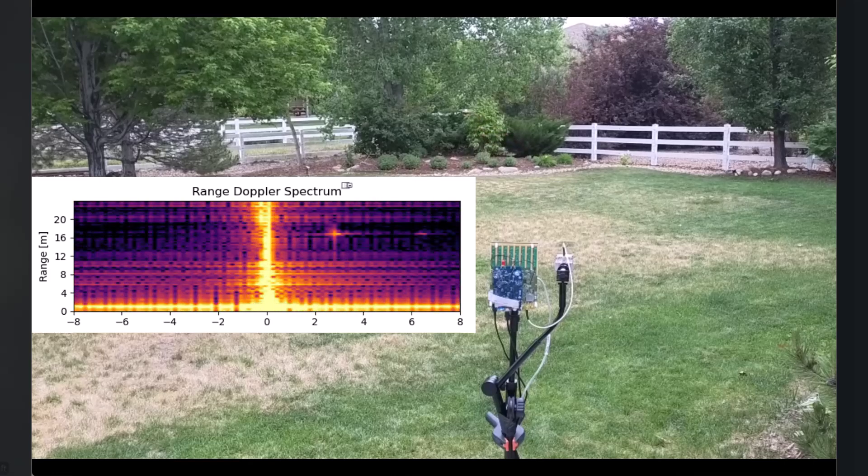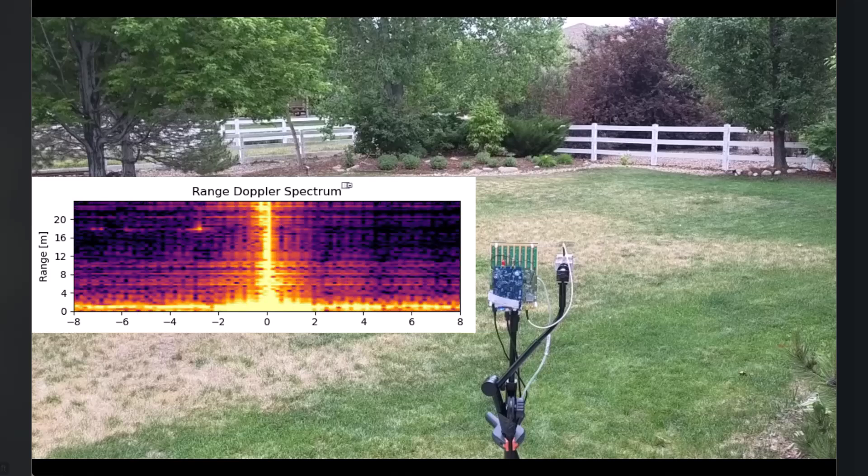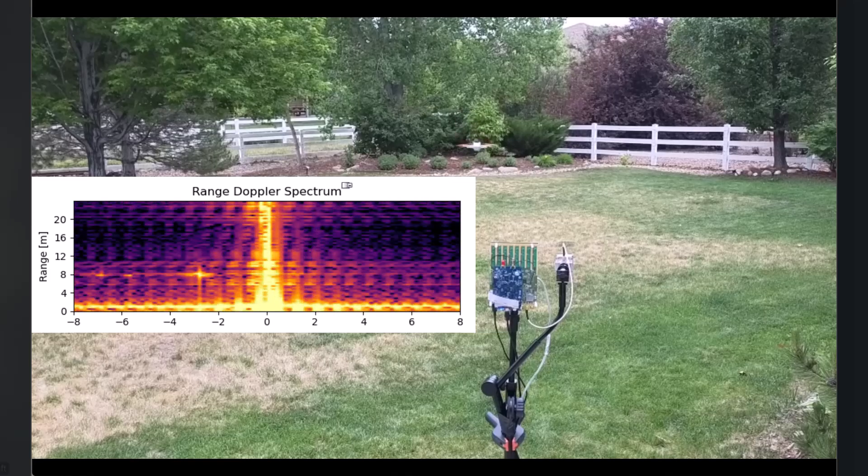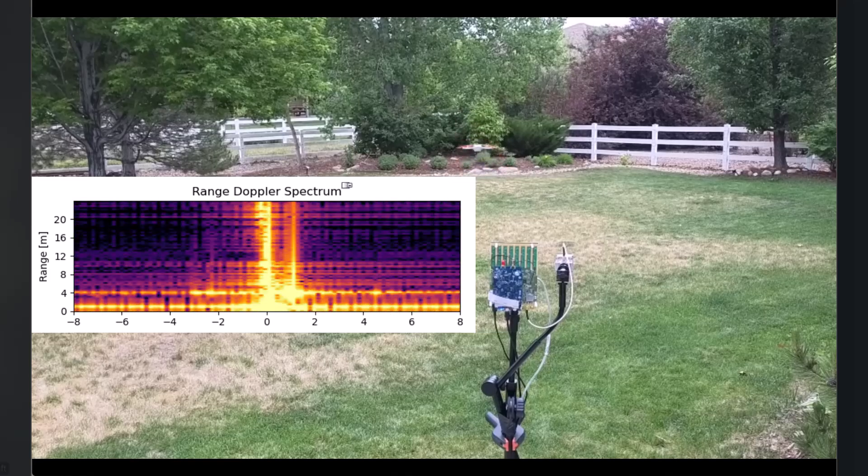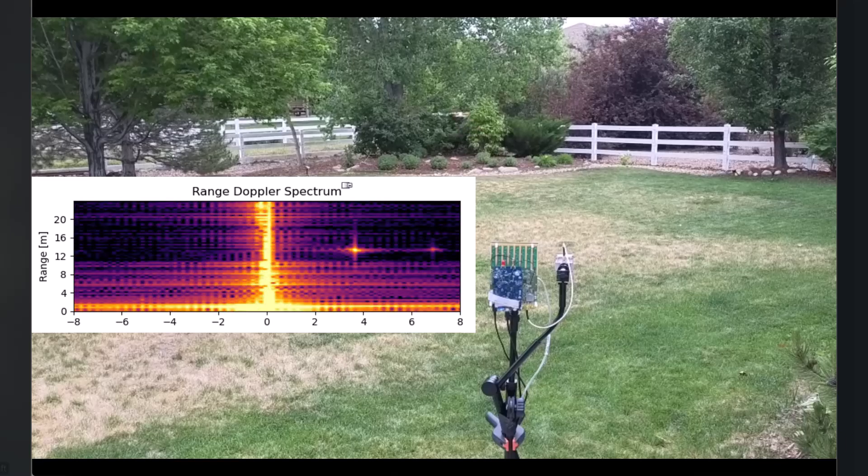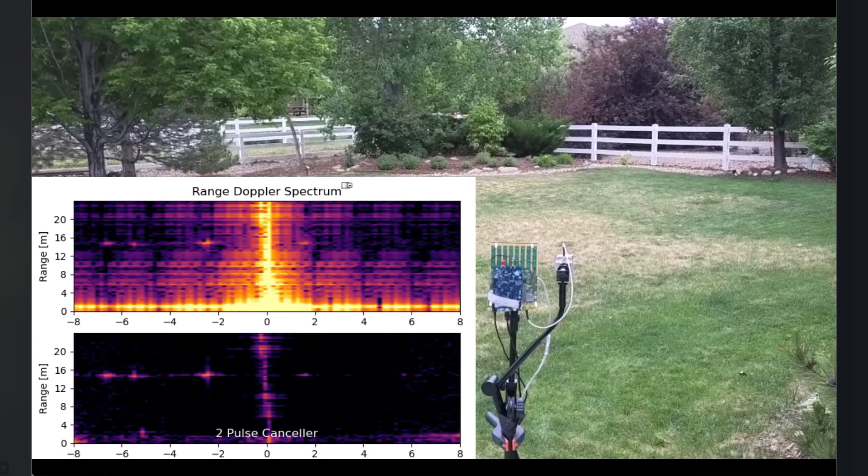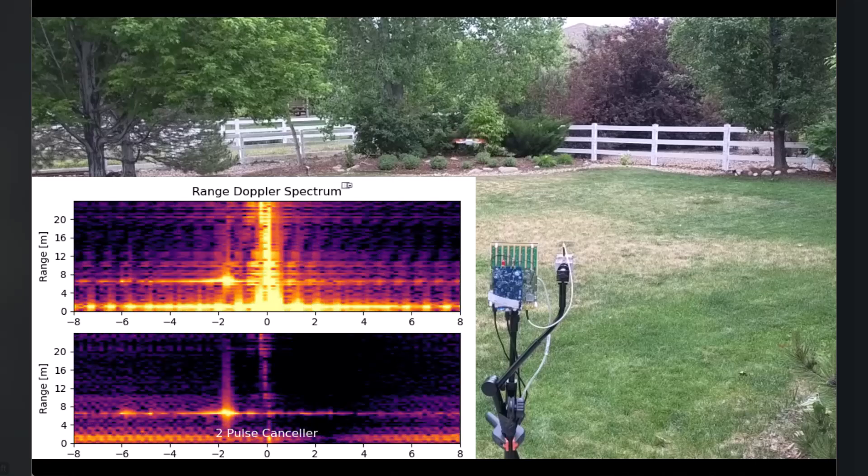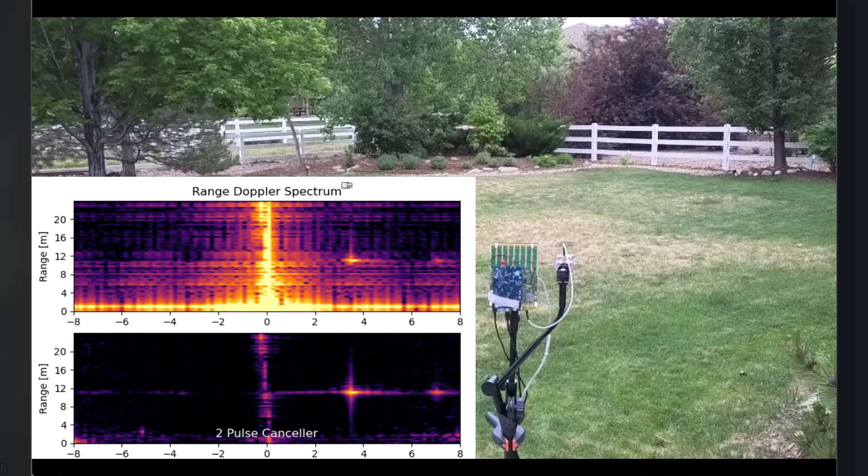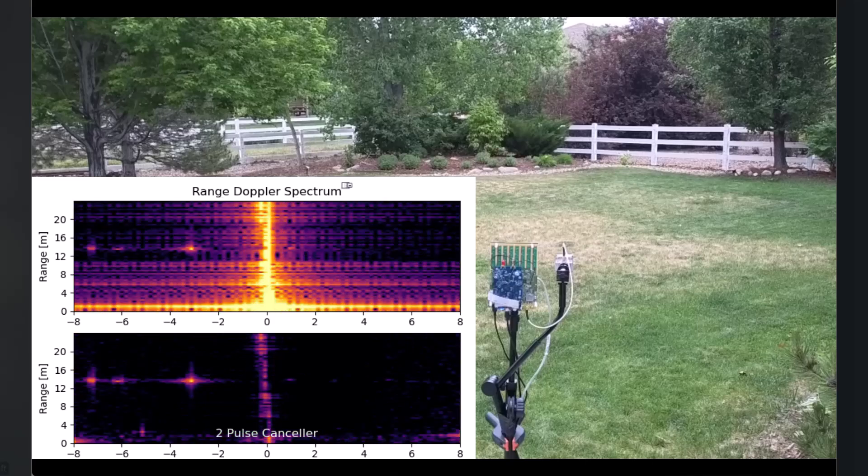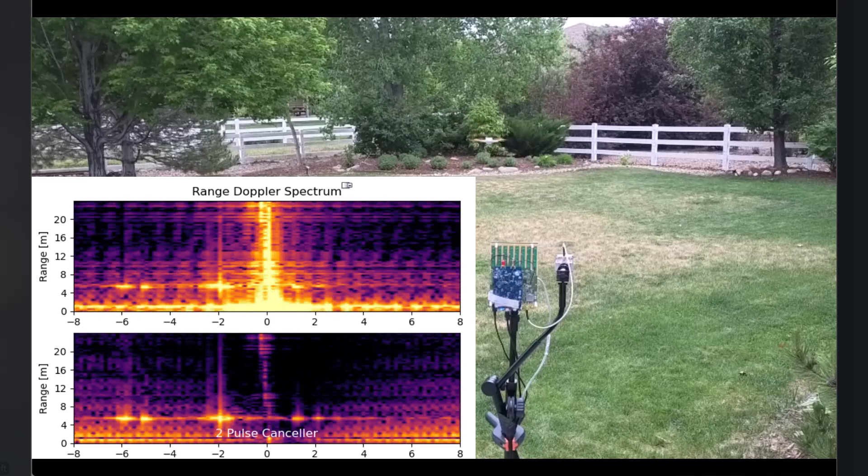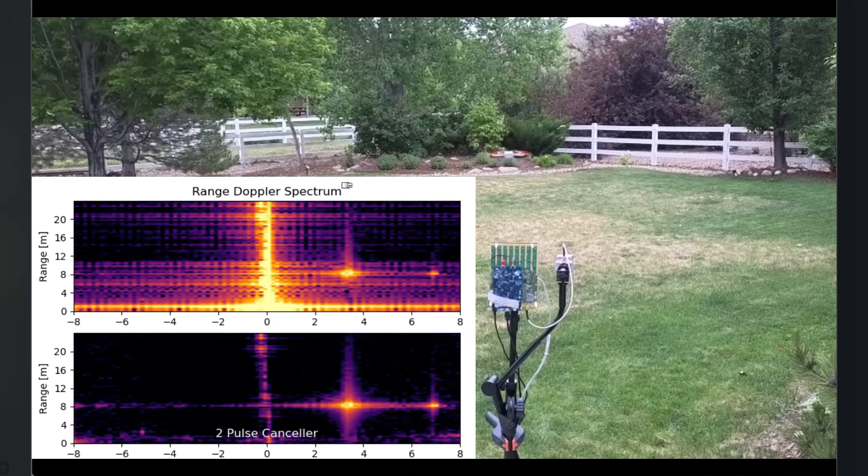This is the same drone and the data from the previous video, and this is the range-doppler plot of that. You can kind of see the drone but you also see all this ground clutter. But now if we apply an MTI filter, a lot of that ground clutter is eliminated but things that move are not attenuated at all, so the drone stands out quite a bit more.